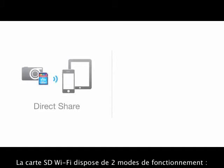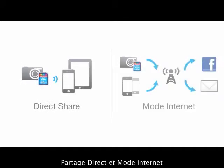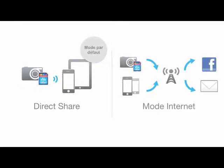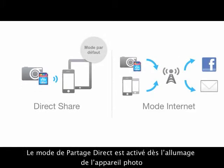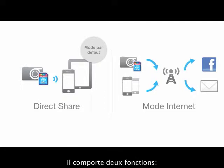The Wi-Fi SD card operates in two modes: direct share and internet mode. By default, direct share mode is activated when the camera is powered on and includes two features: browse and shoot and view.